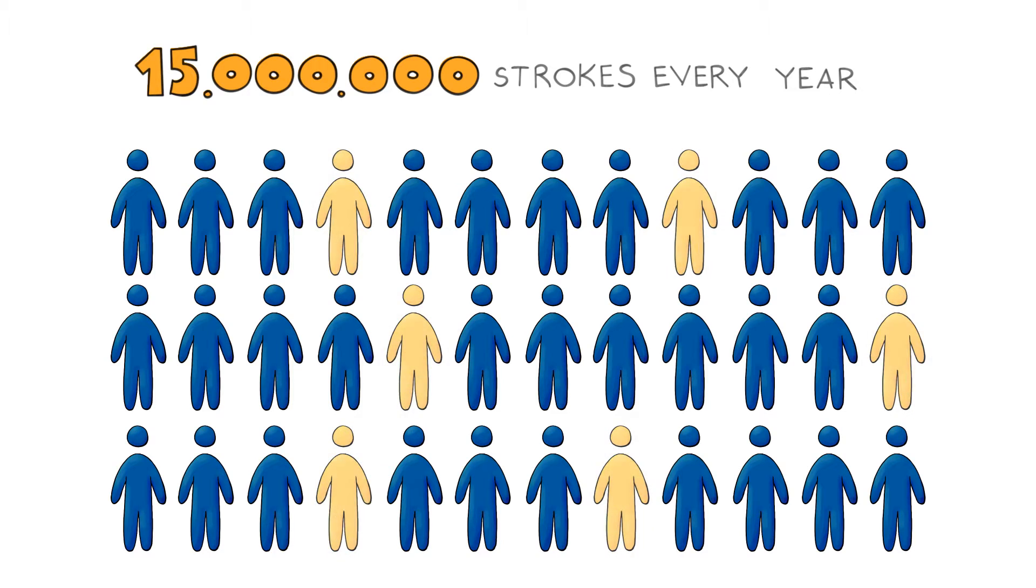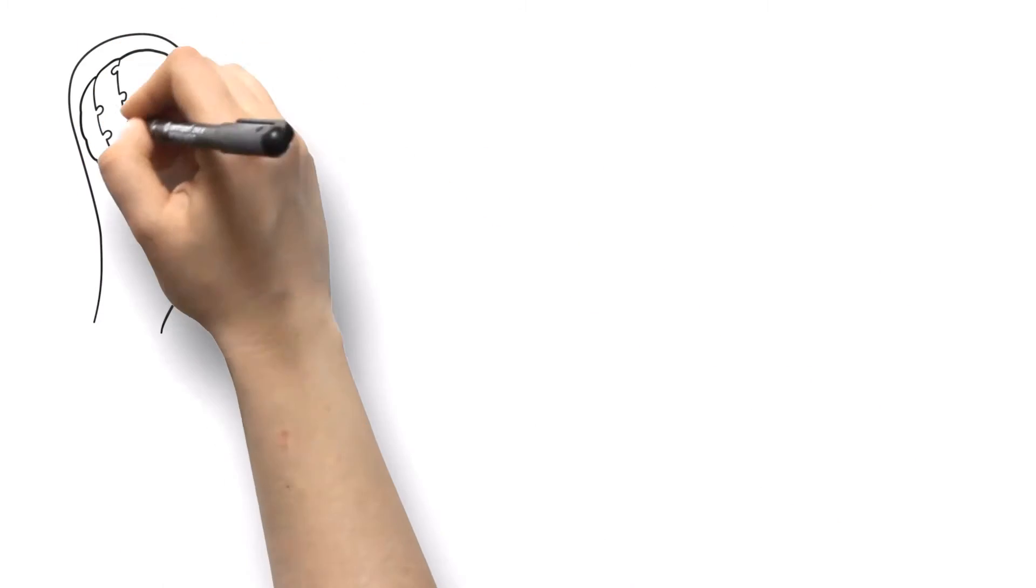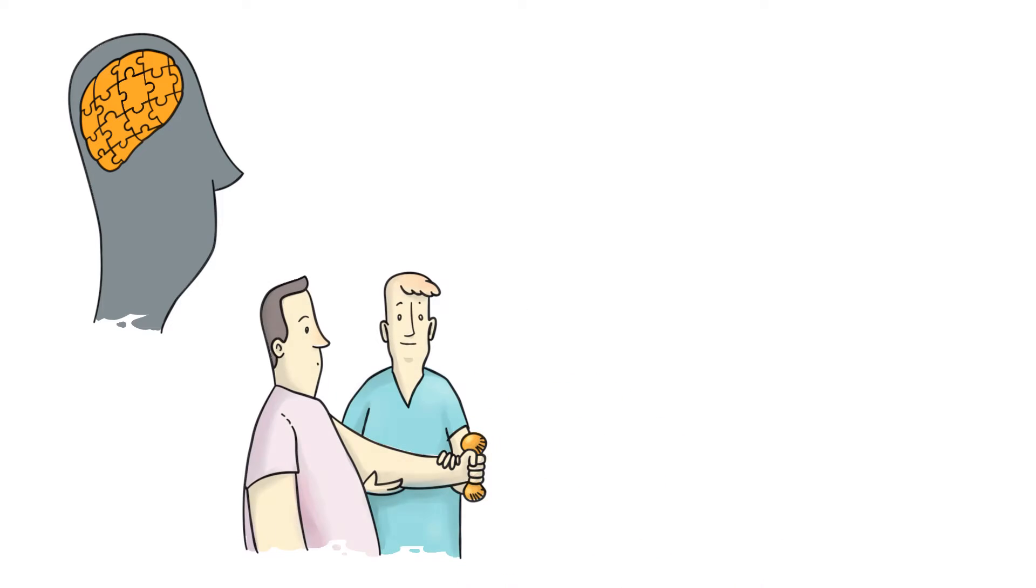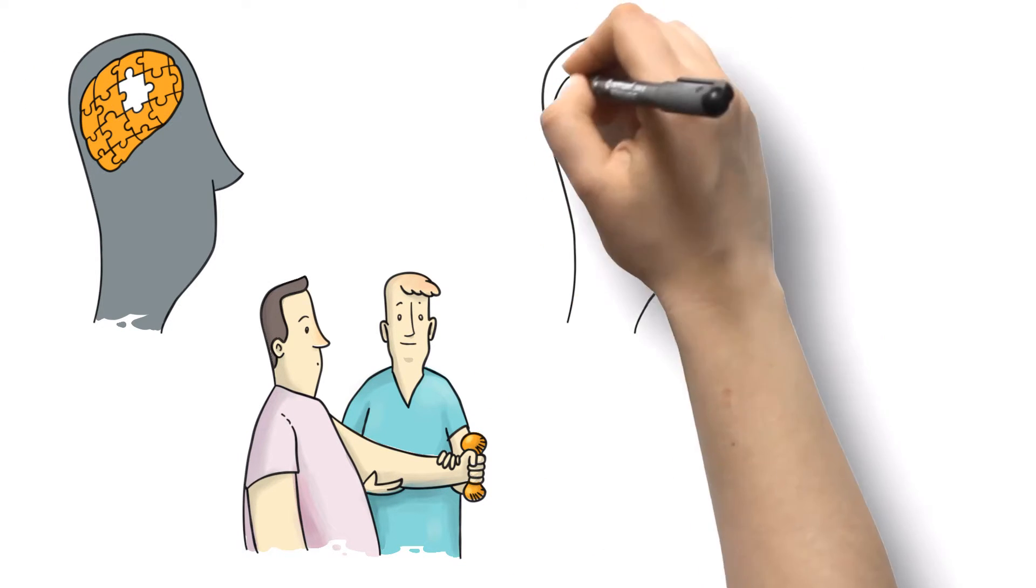While full recovery is possible, many survivors end up having some type of disability. Depending on where one's brain is damaged, a person may have less serious weakness or spasticity of a limb. But for most survivors, stroke rehabilitation is a long-term process lasting months and even years.